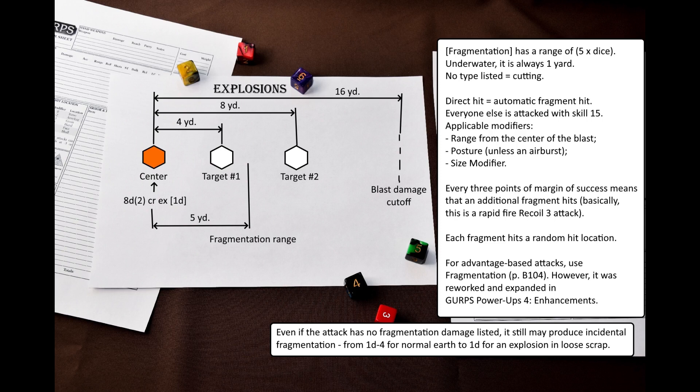Each fragment hits a random hit location. By default, if no damage type is listed in the brackets, the fragments deal cutting damage, but there are other valid damage types, such as impaling, large piercing, or hot fragments that deal cyclic burning damage with a fractional armor divisor. This is used for white phosphorus or napalm warheads. If the base attack does burning damage or is incendiary, then the fragments also are incendiary. If you want to make an advantage base attack to have fragmentation, use the fragmentation modifier. However, you should keep in mind that this enhancement was somewhat reworked and expanded in GURPS Power-Ups 4 Enhancements, so you might want to use that version instead.